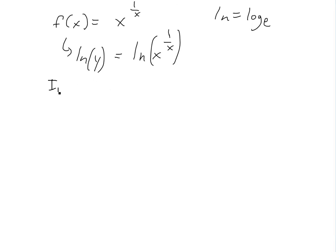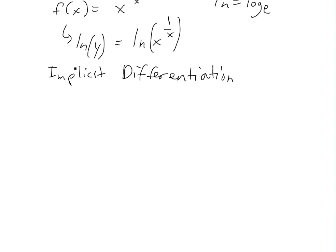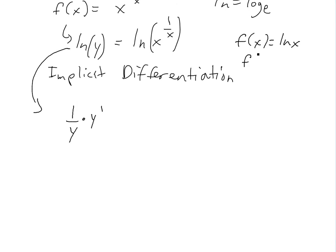Now we'll do implicit differentiation — I'll take the derivative implicitly. I'll show you in another video why this is true and why you can do this. If you take the derivative of ln y, this would just be one over y, then chain rule gives y prime. If f of x equals ln x, the derivative is just one over x — this is why ln is used; log base 10 would be something else.